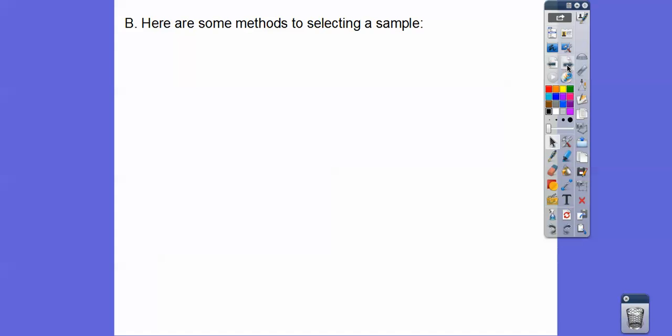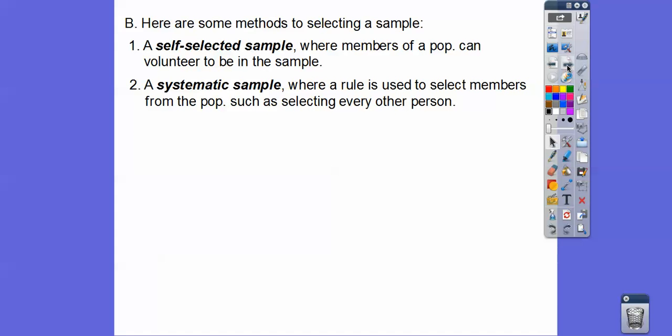Here are some methods of selecting a sample. Some are good, some are bad. Most of them are bad. A self-selected sample is when members of a population can volunteer to be in the sample. That's typically not going to give us a good sample of the population. Any kind of volunteer thing is typically not a good sample technique.